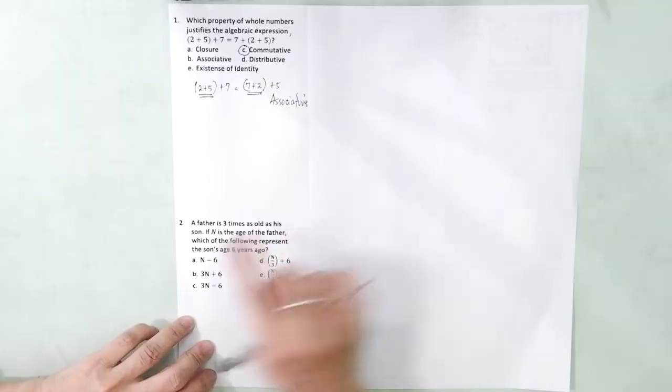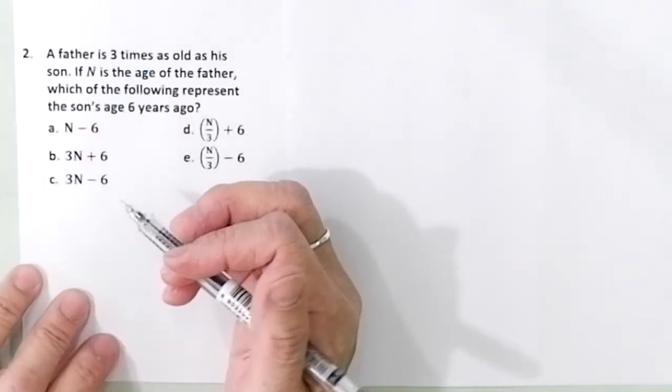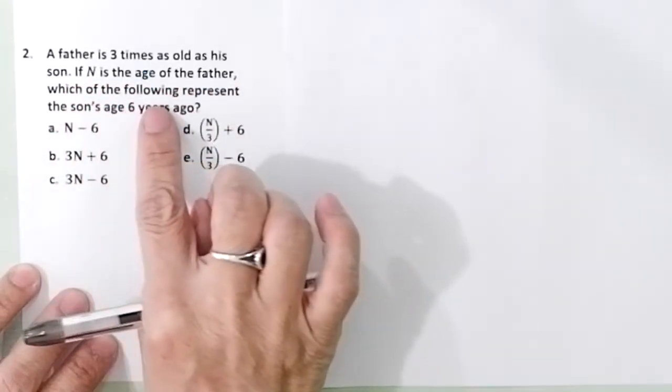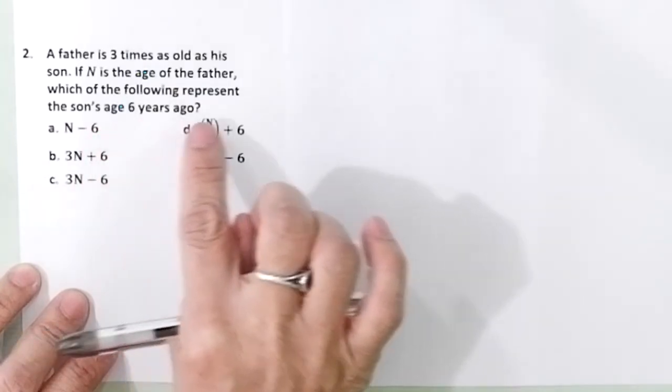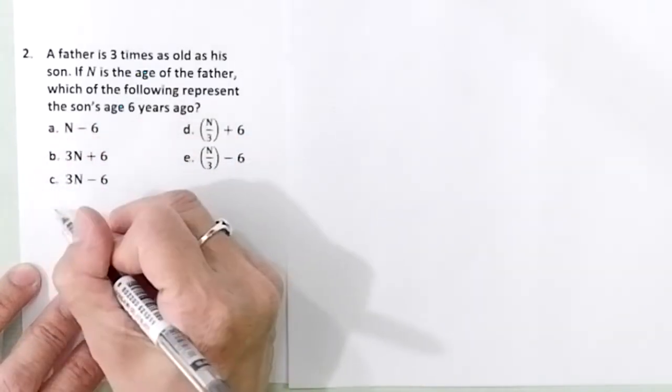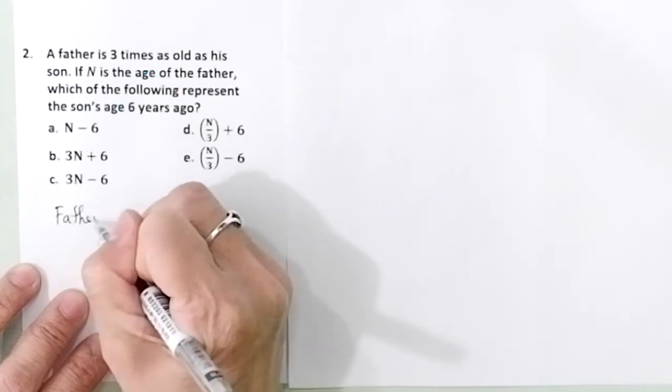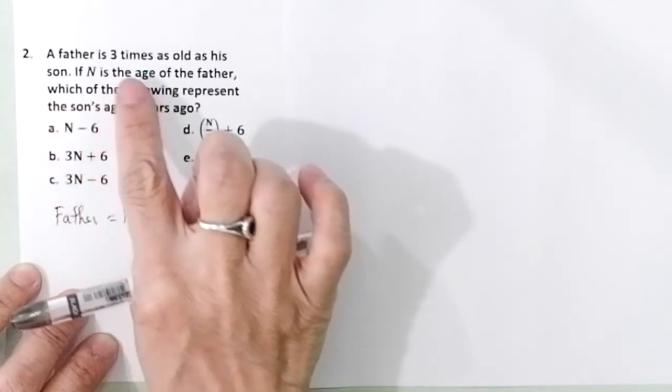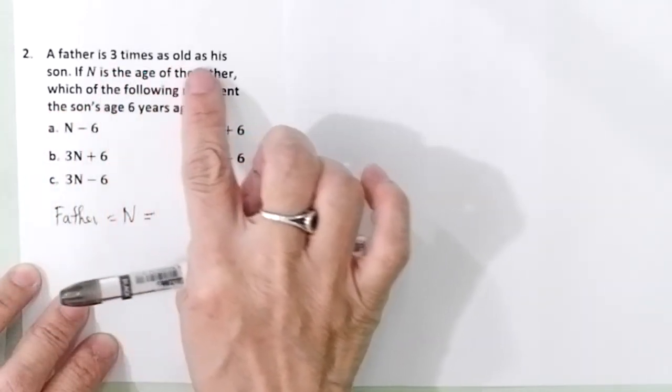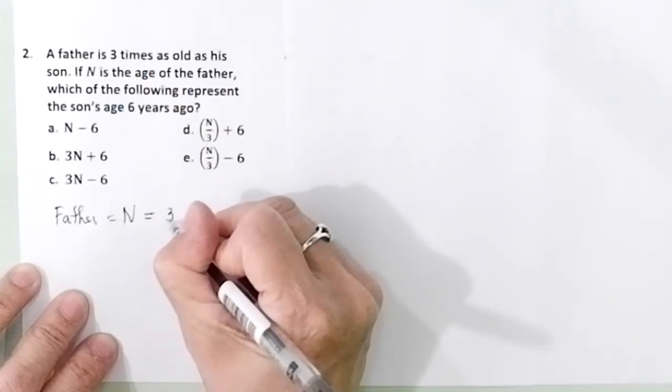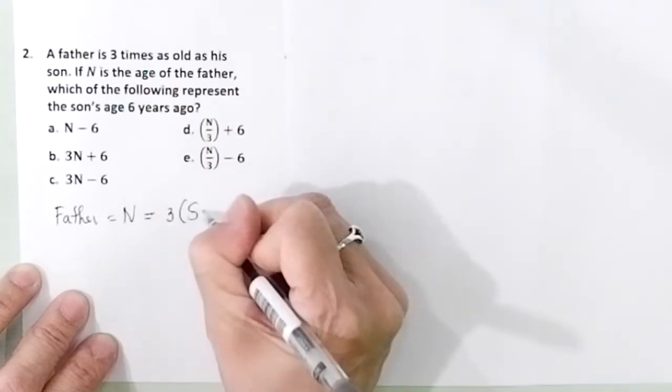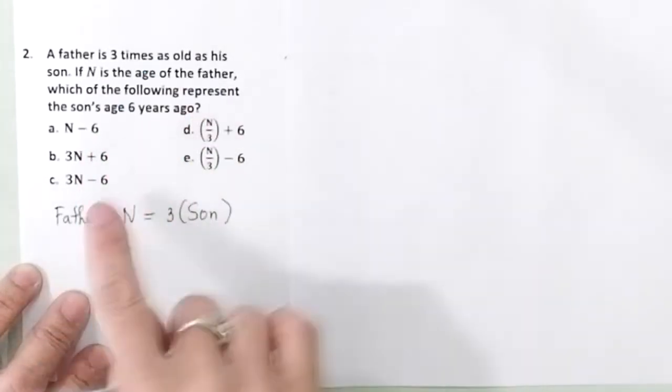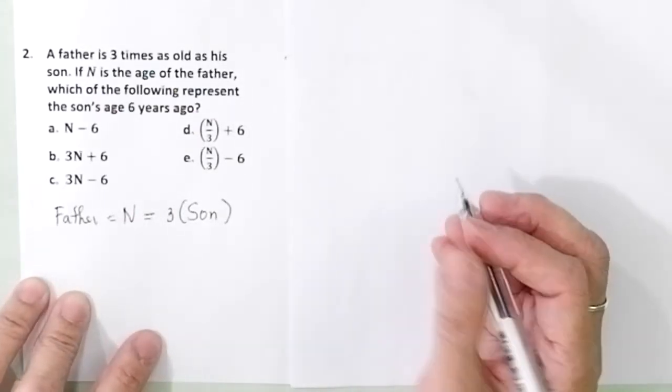Problem number 2. A father is 3 times as old as his son. If N is the age of the father, which of the following represent the son's age 6 years ago? So the father is N. Father, which is N, is 3 times as old as his son. So this is 3 times the son. N is the age of the father. So now, what represents the age of the son 6 years ago?